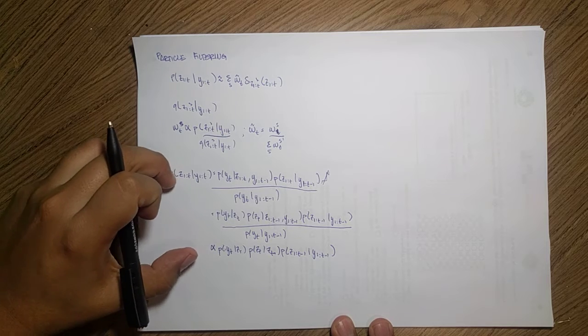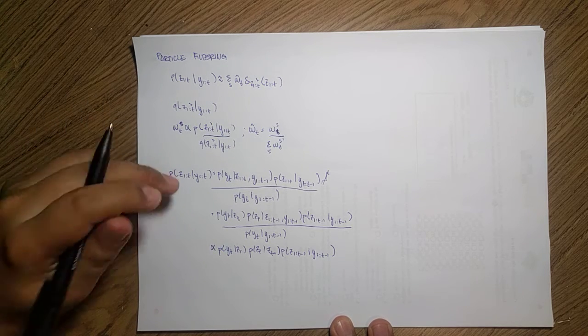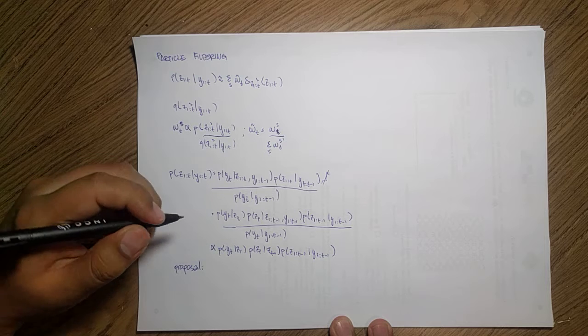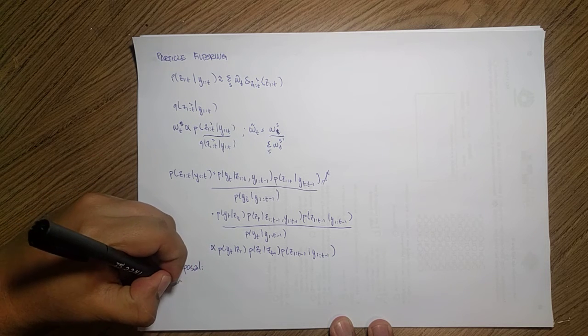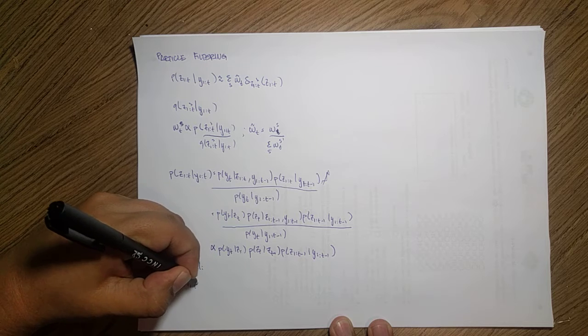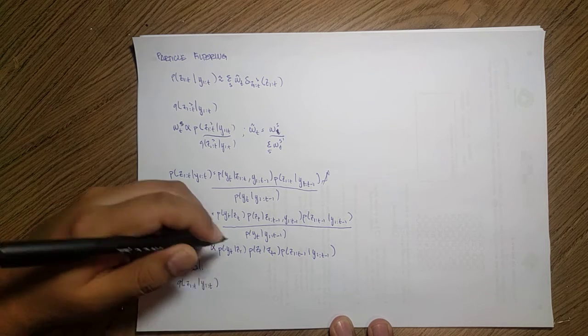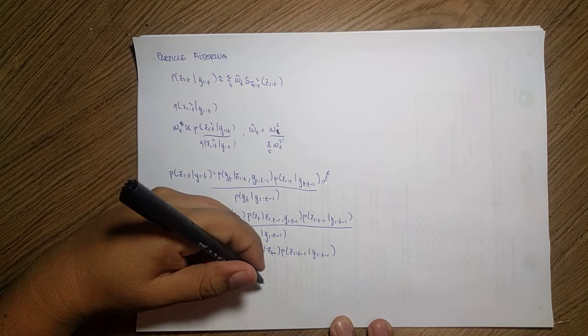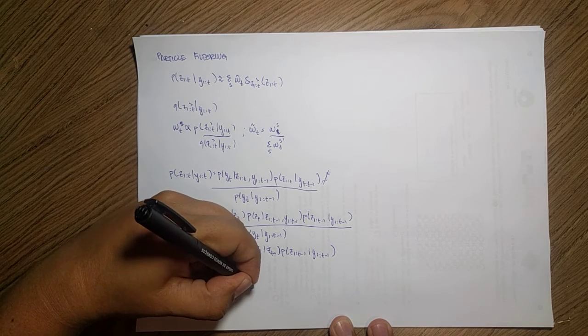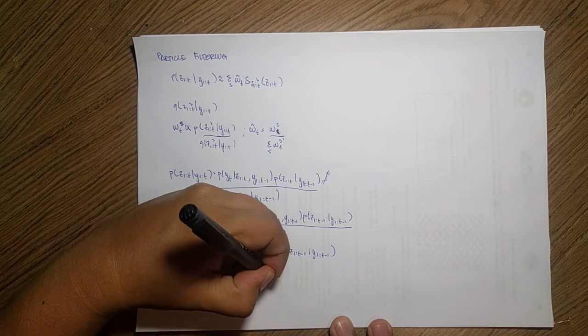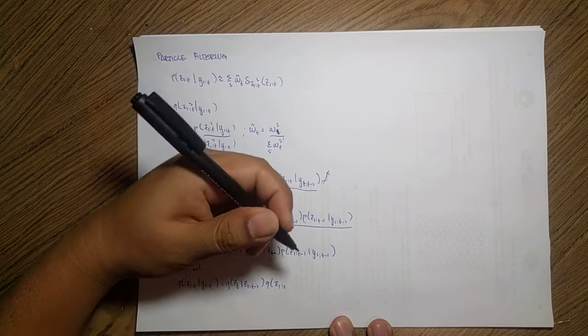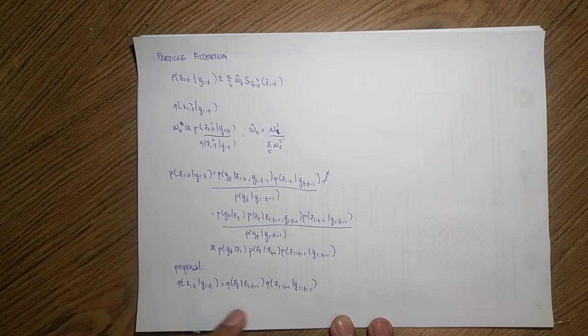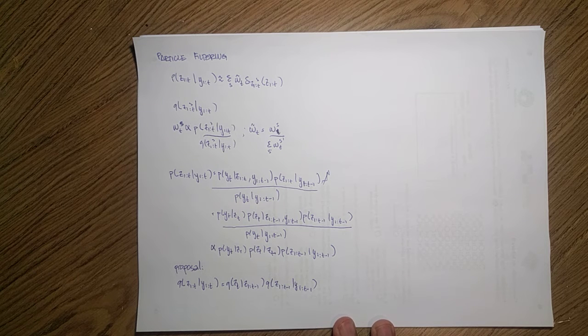Now, this is the Markovian way of my sequence. Now, my proposal, it will become something with the same shape. My Q C one up to T given Y one up to T is equal to my Q C T given C one up to T minus one Q C one up to T minus one. So I wanted to maintain some similar shape.